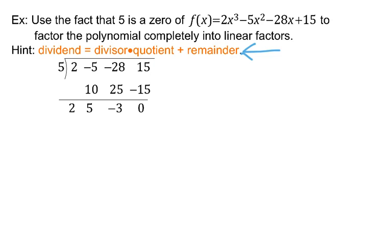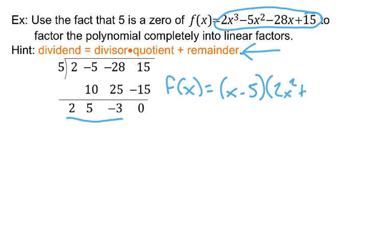The dividend is this function f. The divisor, the connection we're making is that 5 as a zero goes along with the fact that x minus 5 is a factor. So the divisor was x minus 5, times the quotient. The quotient is this polynomial described right here, excluding the final number. That would be 2x squared plus 5x minus 3, times quotient plus remainder, and the remainder is 0.